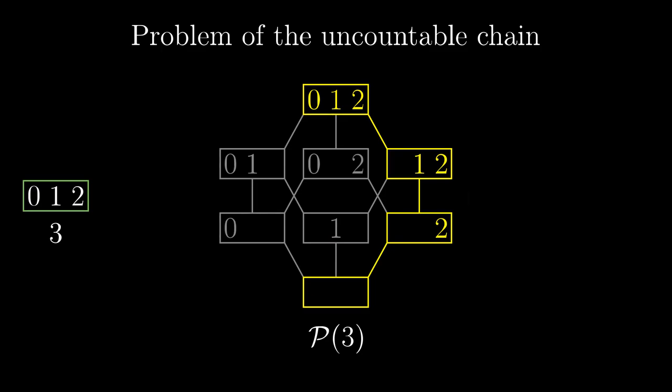If we start with a finite set, the size of the largest possible chain is just one more than the size of the original set. So the largest chain in P(3) has 4 elements.